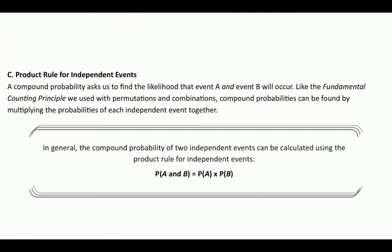Here is the product rule for independent events. A compound probability asks us to find the likelihood that event A and event B will occur. Like the fundamental counting principle used with permutations and combinations, compound probabilities can be found by multiplying. The key word here is AND. The probability of completing event A and then event B can be found by taking the probability of event A and multiplying it by the probability of event B: P(A and B) = P(A) × P(B). It's now very important to define our events and carry through with proper notation.